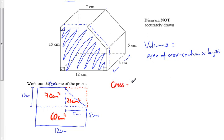So that means that the cross-section is equal to a total of 155 cm squared for the cross-section.